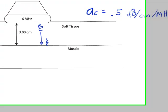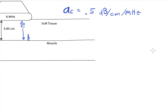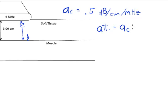So if I wanted to write a formula to determine the attenuation here, I might say attenuation is equal to the attenuation coefficient times the distance that the pulse has traveled times the frequency.